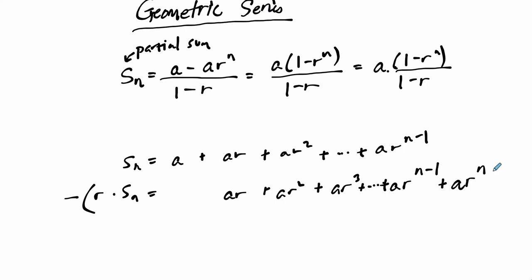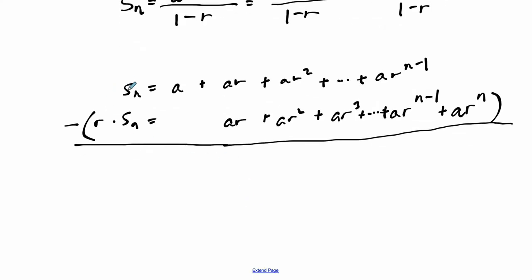How does this help us? How does this get us to this formula here? Well, we subtract. In the arithmetic sequence proof of a partial sum we would add them, and here we're subtracting. What do we get? Partial sum minus r times the partial sum.